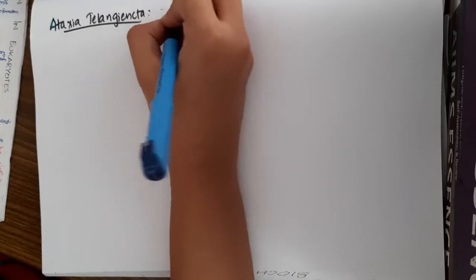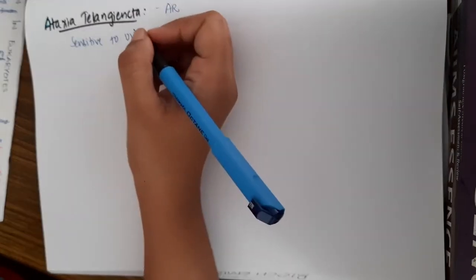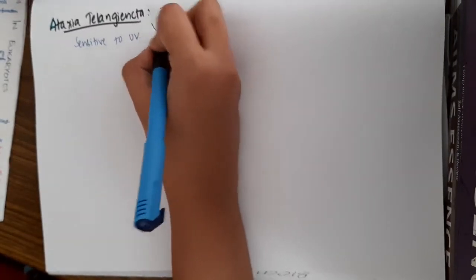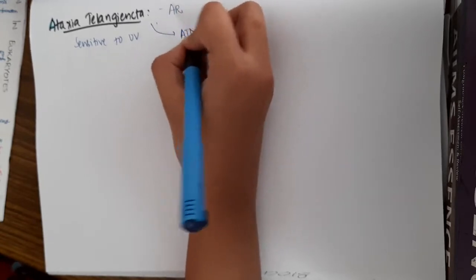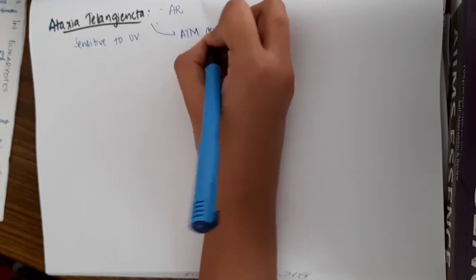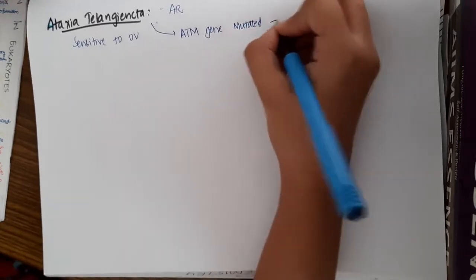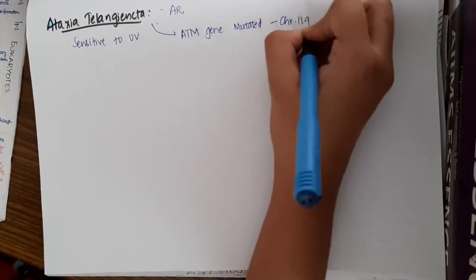This ataxia telangiectasia is also an autosomal recessive condition. It is also sensitive to UV light. This occurs due to a mutated gene called the ATM gene, and this ATM gene is located on chromosome 11Q. This mutated gene is present in 1% of the total population.